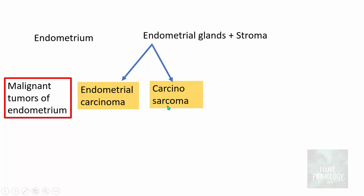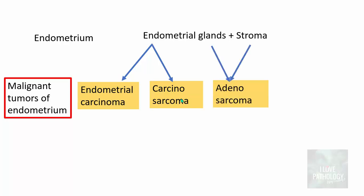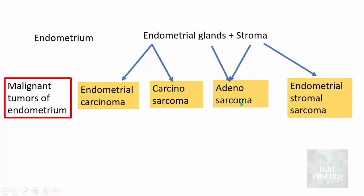The second type is Carcinosarcoma — a mixture of carcinoma and the mesenchymal component. This also arises from endometrial glands; though it has a mesenchymal component, this is not a stromal tumor. The third type is the combination of benign endometrial glands and a malignant stromal tumor, that is Adenosarcoma. And the last one is pure stromal malignant tumors, called endometrial stromal sarcoma.